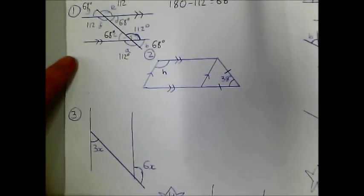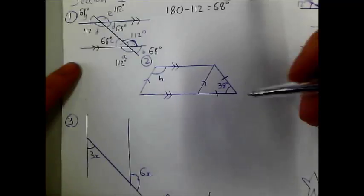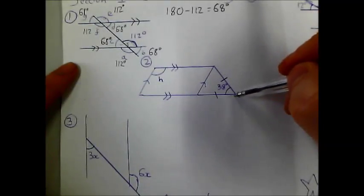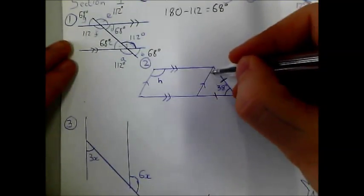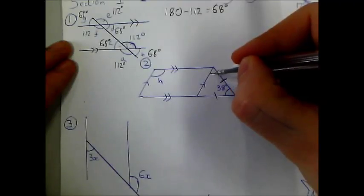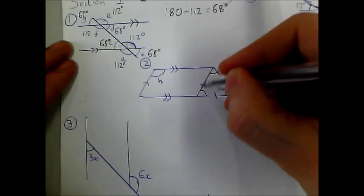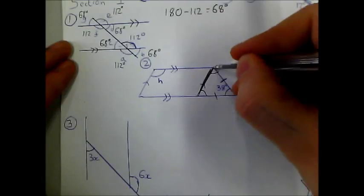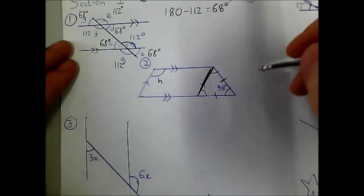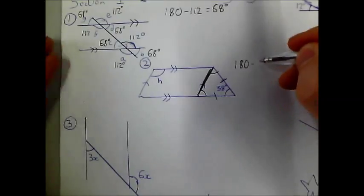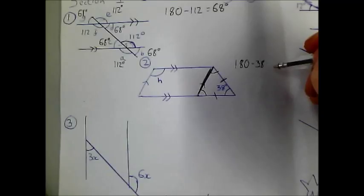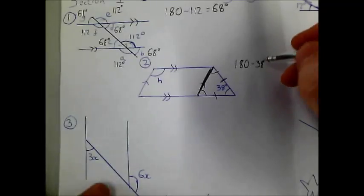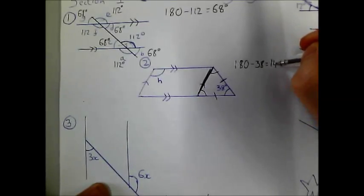Let's have a look at question two — this is a multi-part question. First thing I notice is I've got a triangle with two lines the same length, which means it's an isosceles triangle, and the base angles — the two angles on the unequal side — are going to be equal. So let's first do 180 take away 38, which gives me 142 degrees.